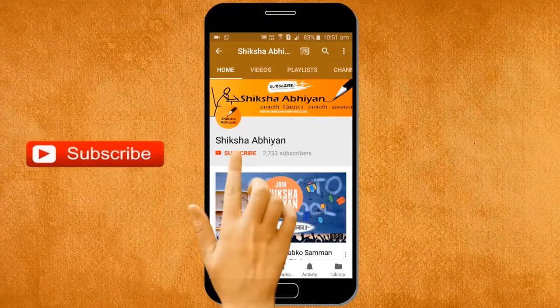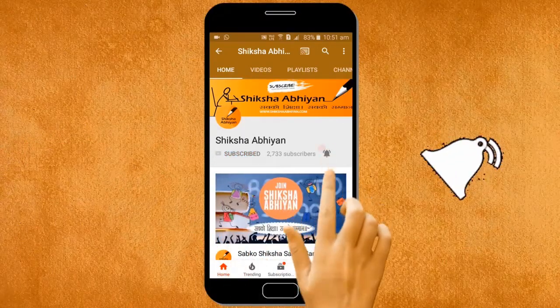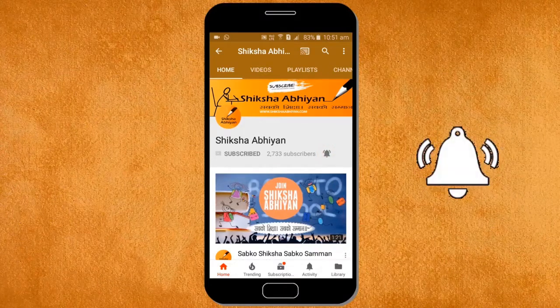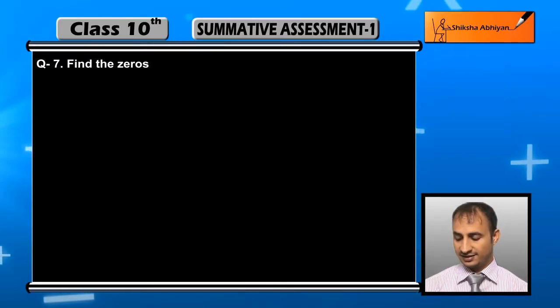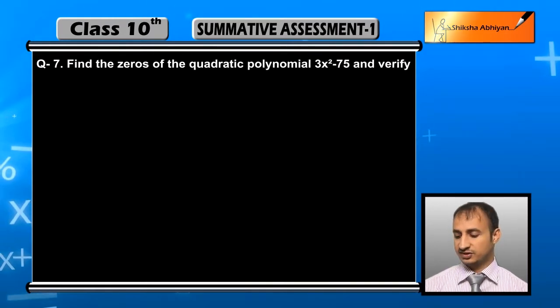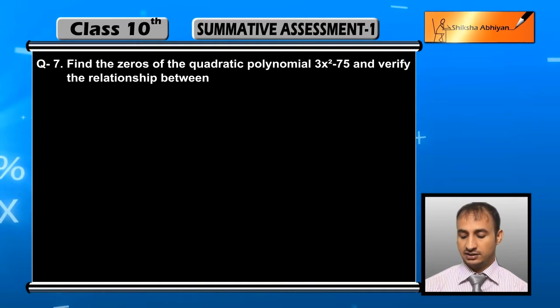Subscribe to our channel by clicking the subscribe button, click the bell button and enjoy the latest uploads from our channel. The seventh question is: find the zeros of the quadratic polynomial 3x² - 75 and verify the relationship between the zeros and the coefficients.